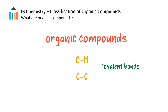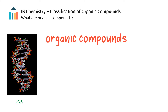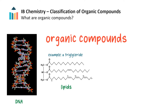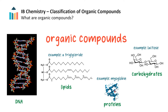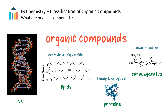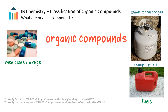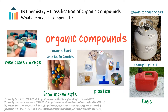These types of bonds are covalent bonds. Biological systems are constructed almost entirely from organic compounds, such as DNA, lipids, carbohydrates and proteins. Many synthetic materials, including most drugs, fuels, plastics and food ingredients, also consist of organic compounds.